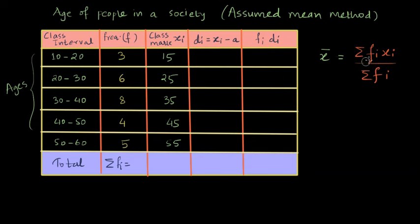Sometimes the procedure becomes complicated when the multiplication becomes complicated. And in such instances, what we do is we first assume some mean. And once we assume that mean, we find a deviation for each class mark from that mean. So the first step is to assume some mean.